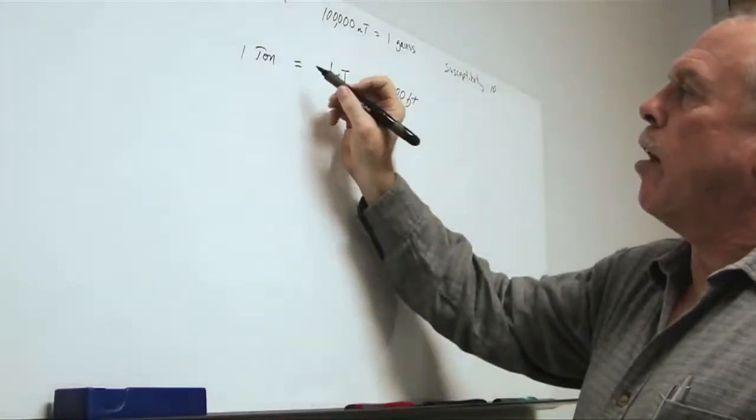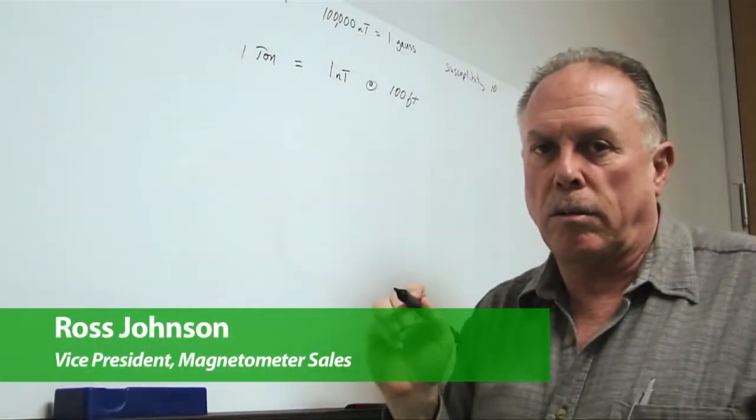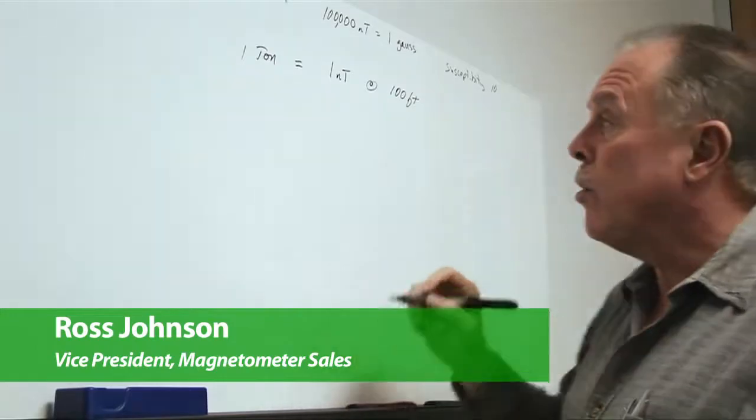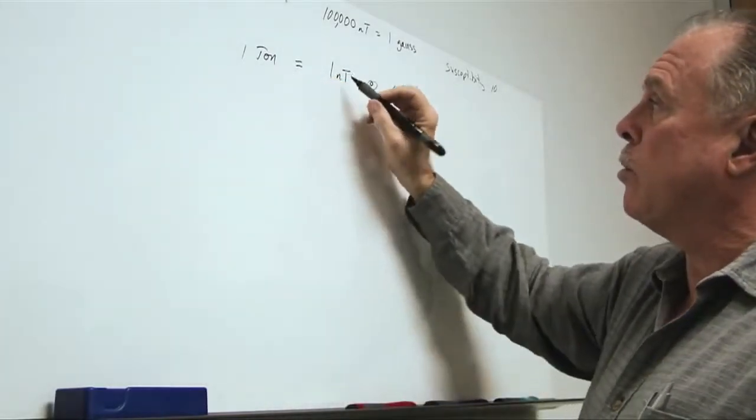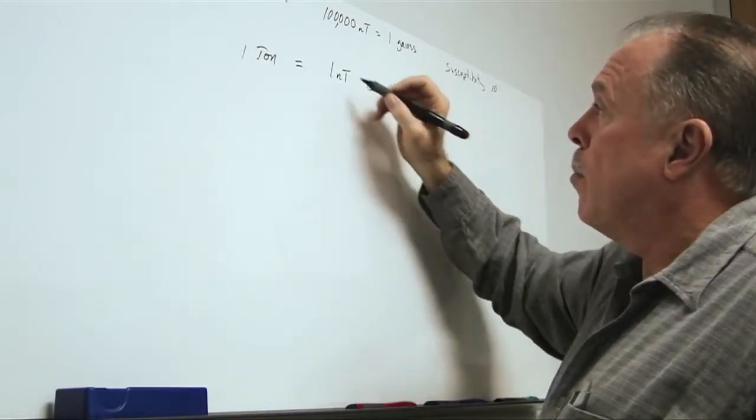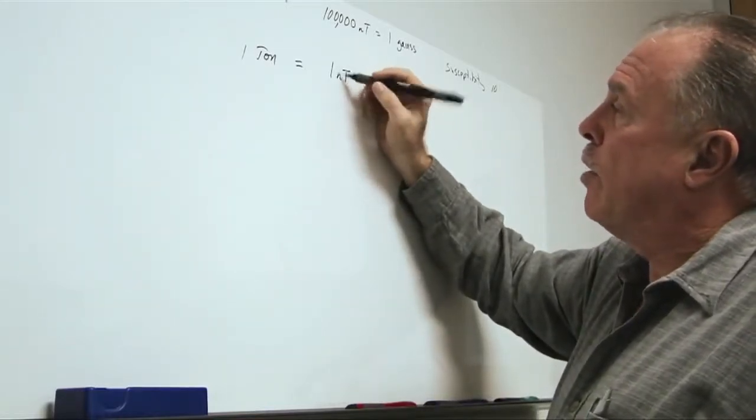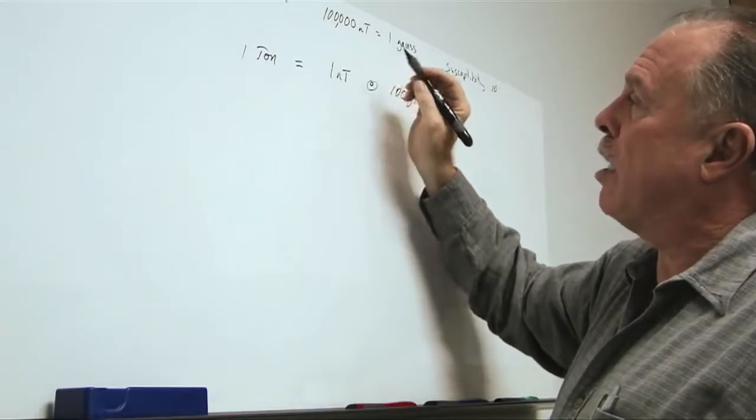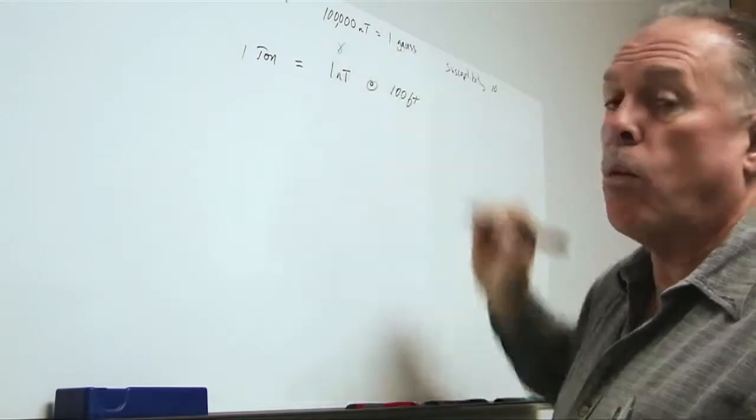So, back to the topic of the distance at which we can see targets. The rule of thumb is one ton equals one nanotesla distortion at 100 feet. By the way, in the parlance of geophysics, one nanotesla is also sometimes called one gamma.